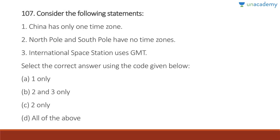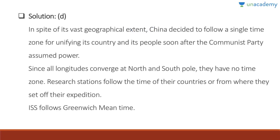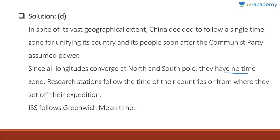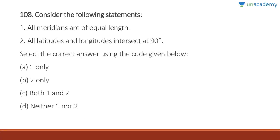Question 107: China has only one time zone — absolutely correct. The North Pole and South Pole have no time zones — correct. The International Space Station uses GMT — also correct. Answer is D, all of the above. Despite vast geographical extent, China follows a single time zone for national unity since the Communist Party took power. Since all longitudes converge at the poles, they have no time zone. The ISS follows Greenwich Mean Time.